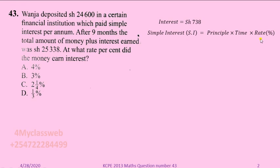Interest is shillings 738. From our formula for simple interest, we take the Principal, multiply by Time — which is the fraction of a year — then multiply by the Rate over 100, because Rate is in percentage. So R over 100 represents the rate. We now have an expression that will help us calculate the rate in percentage.